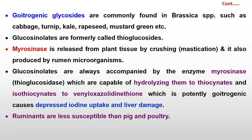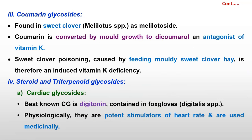Ruminants are less susceptible than non-ruminants to goitrogenic glycosides. In case of goitrogenic glycosides, ruminants are less susceptible, so non-ruminants are more susceptible. Next is coumarin glucosides.